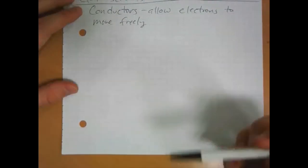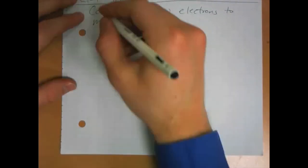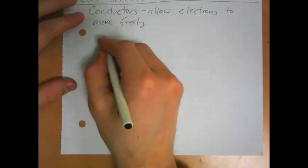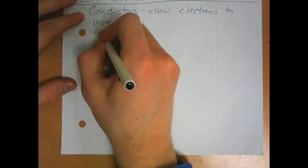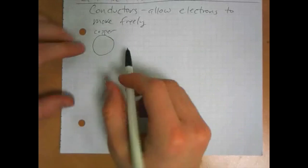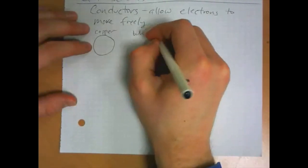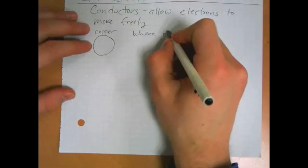One consequence of that has to do with how charge is distributed over a conductor. So let's say we have a sphere, a solid sphere of some conducting material, say copper. We have a copper sphere. We give it a charge, a net charge by either taking away electrons or adding electrons.